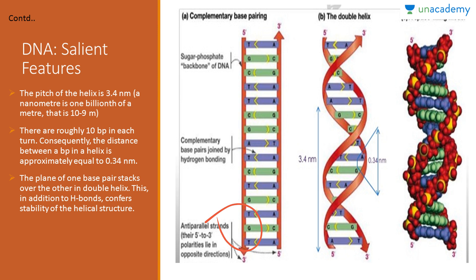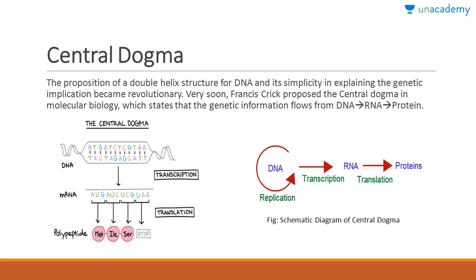The plane of one base pair stacks over the other in the double helix. This stacking, in addition to the hydrogen bonds between the bases, confers stability to the helical structure. So the two features conferring stability to the DNA double helix are base pair stacking and hydrogen bonding.